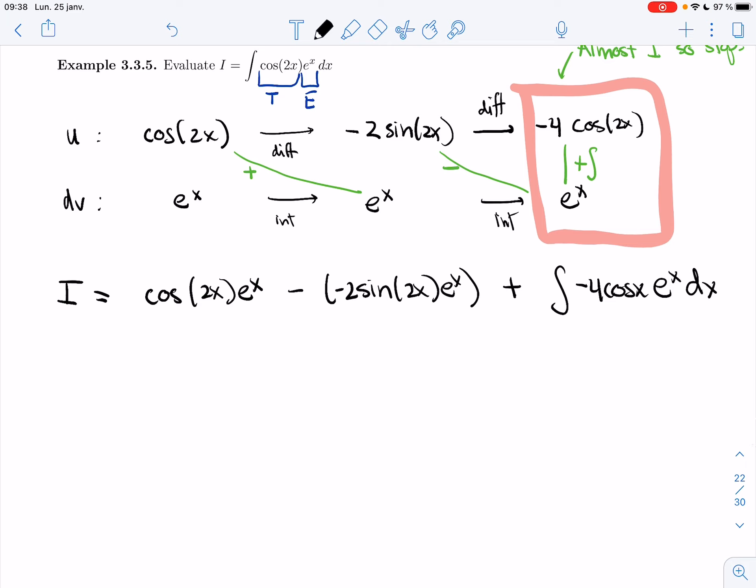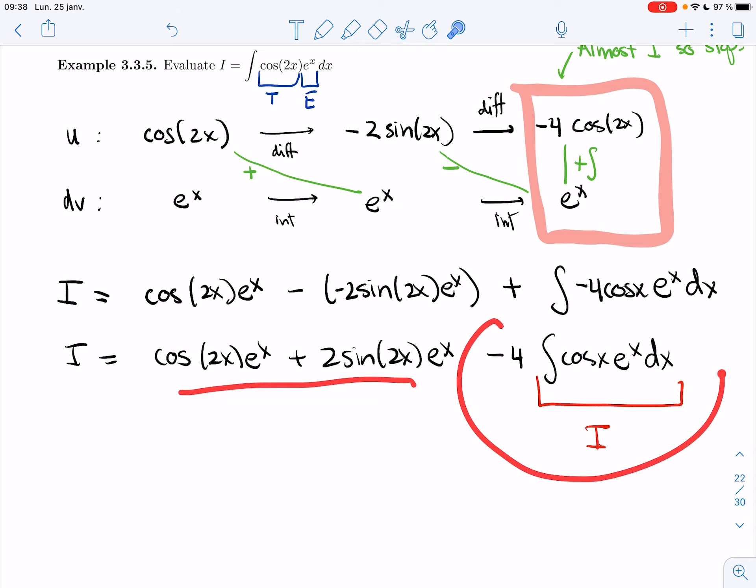All right, let me pull out the four, so that we could see what we have. So my I is equal to all of this, and then I have minus 4∫cos(x)e^x dx. That right here is I. So I have I equals to some function, minus 4I.